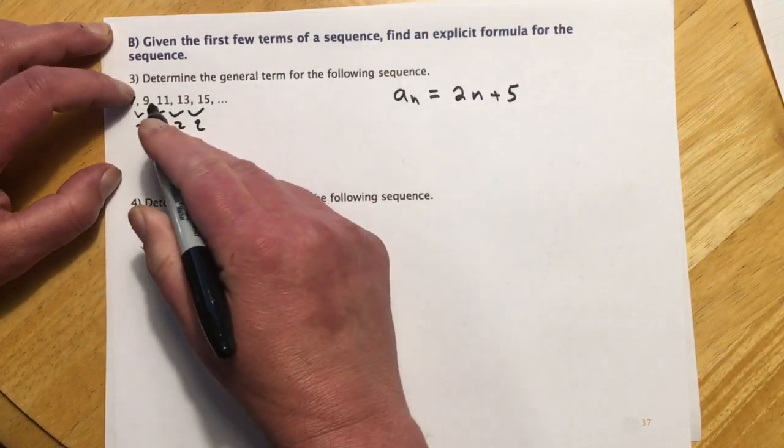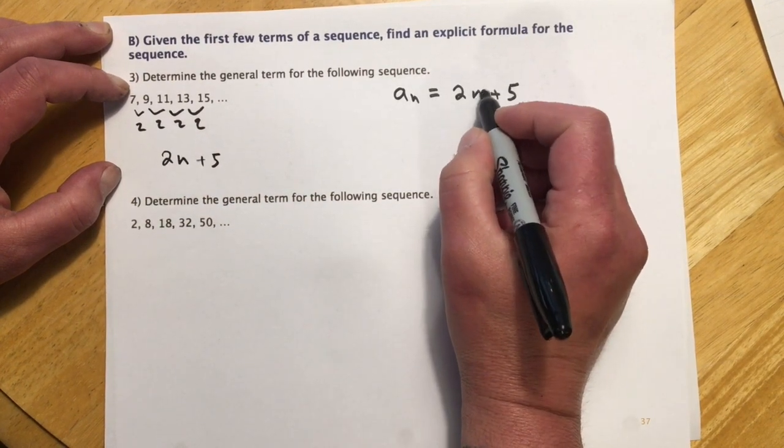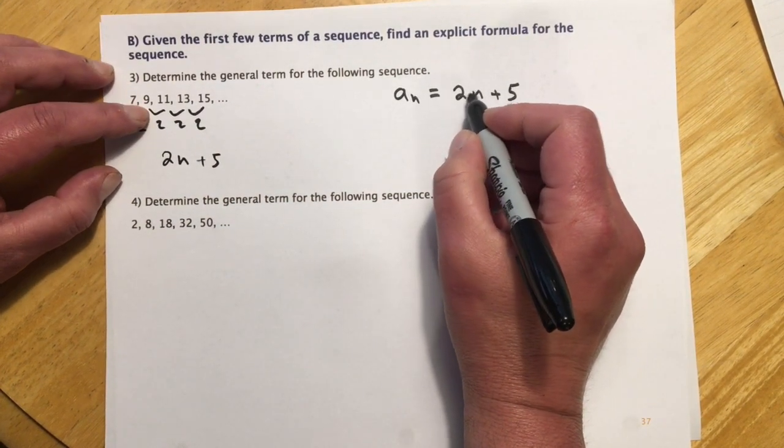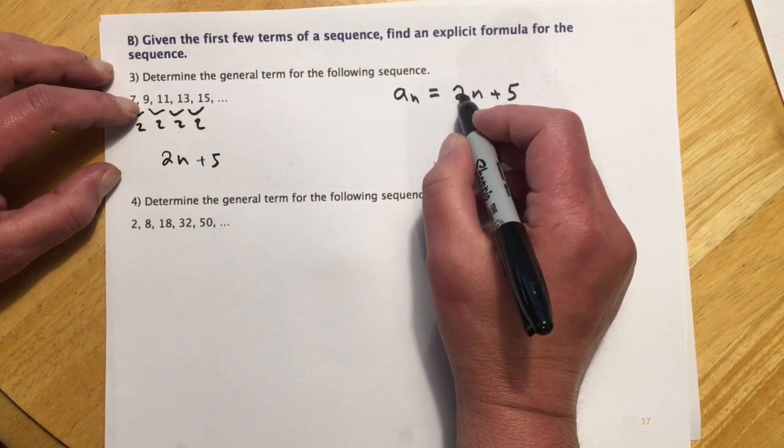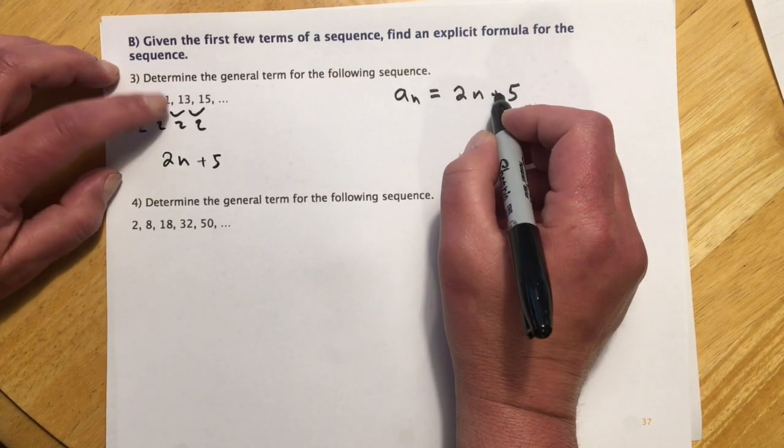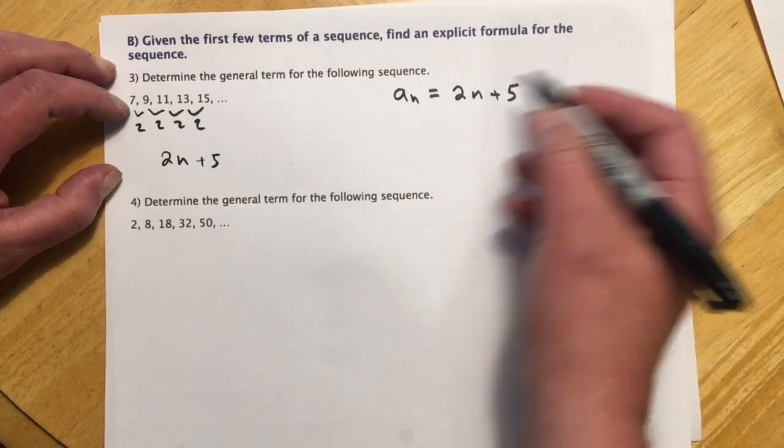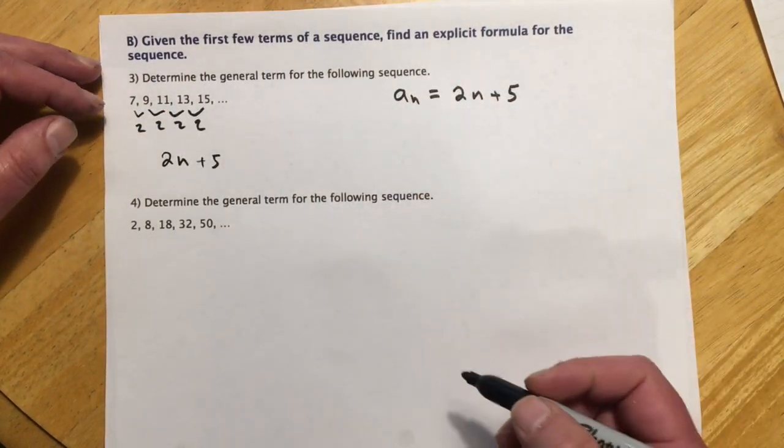And then we can check that with these other ones. If I put in n is 2, which would be the second term, I get 2 times 2 is 4 plus 5. That's 9. If I put in 3, 2 times 3 makes 6 plus 5. There's 11 and so forth. So that would be our general term.